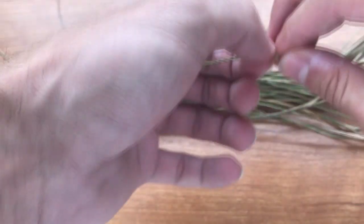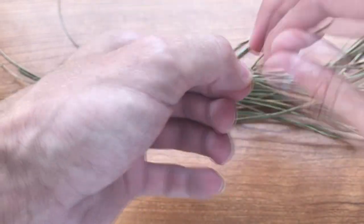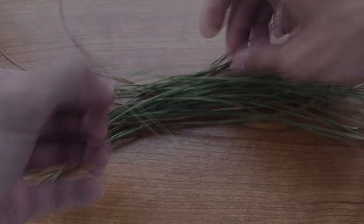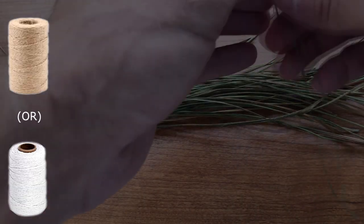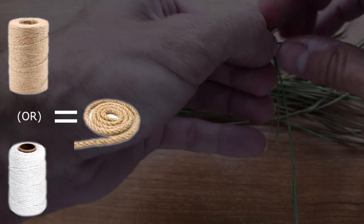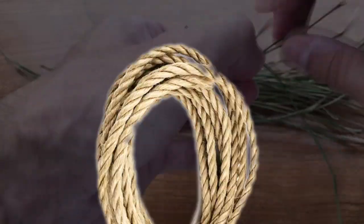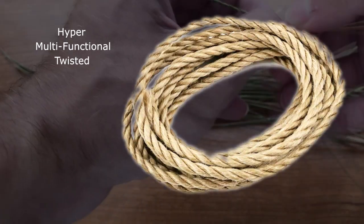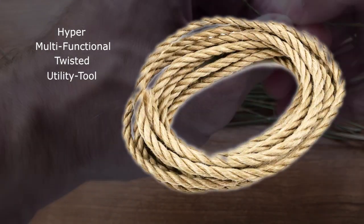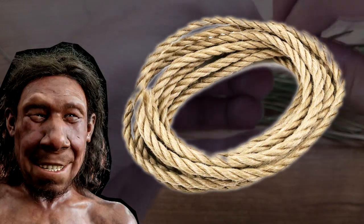Yet with rope, we do all these assorted things with it, but I haven't actually thought about how it's made. You take string or twine, turn it into a chord, then a chord into rope. Look, it's rope — the hyper-multifunctional twisted utility tool from the late ages, same as the Neanderthal.